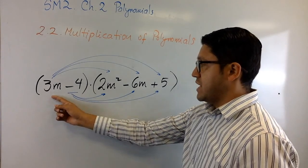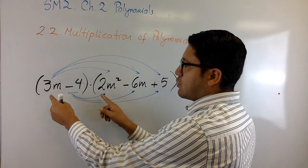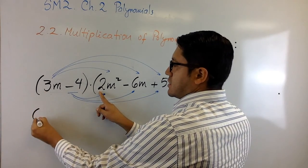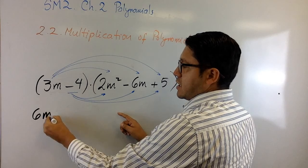So let's begin with 3m. 3m times 2m squared. So how does that work? I'm going to multiply the numbers. It's 6 and m times m squared is m cubed.